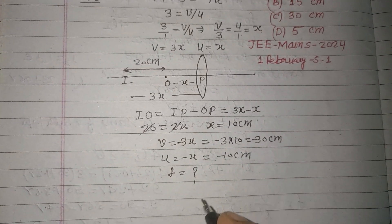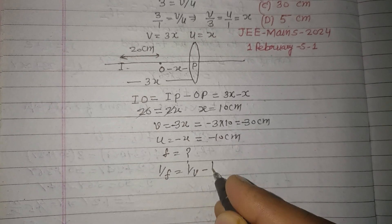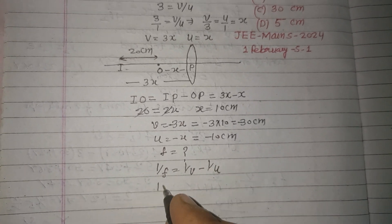We want to find out the focal length of the lens using the lens formula: 1 upon f equals 1 upon v minus 1 upon u.